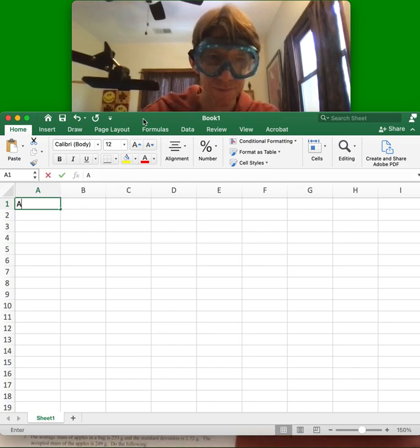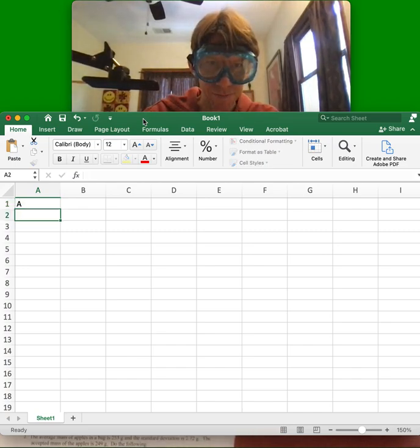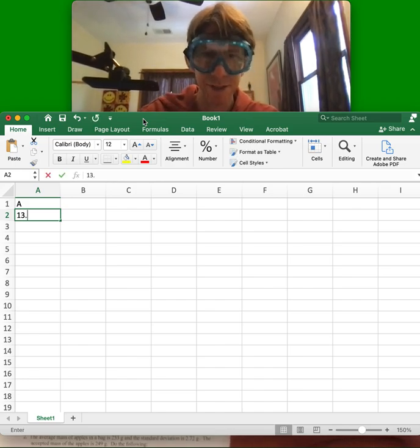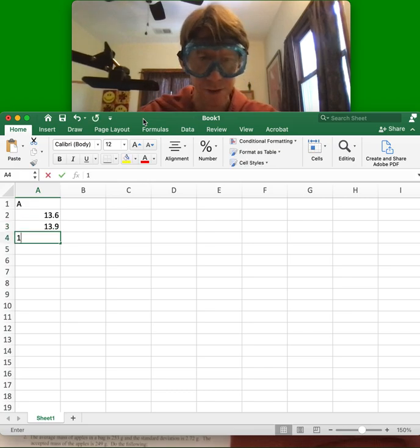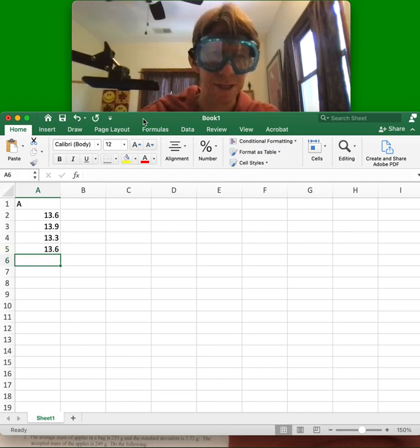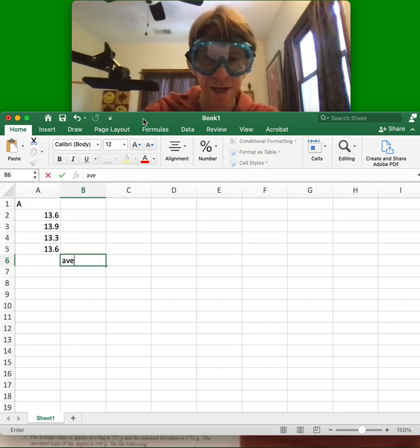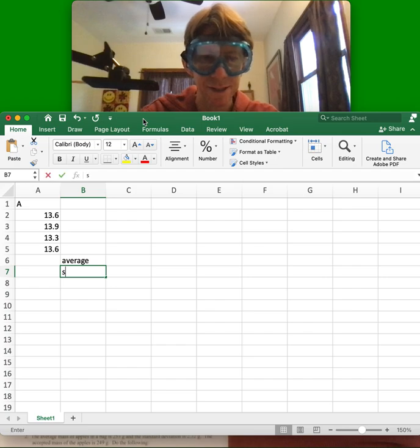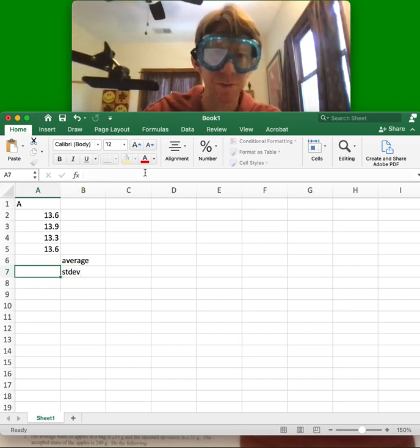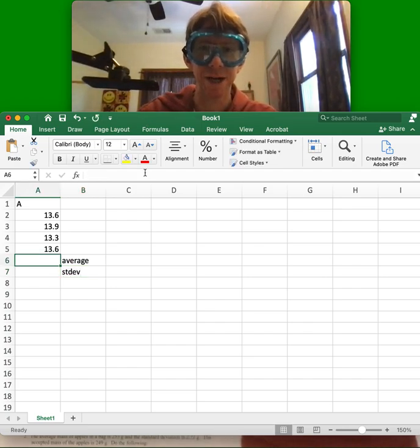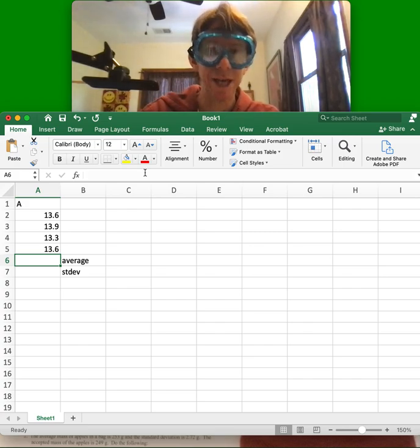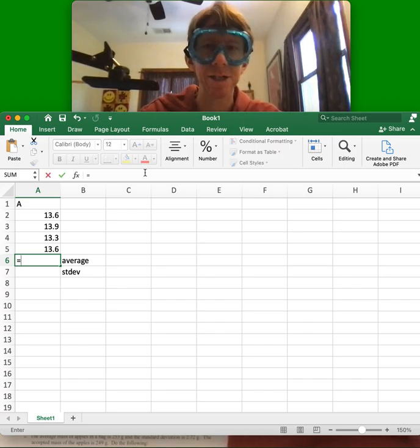And in order to do that, I am going to do my average and standard deviations at least on Microsoft Excel. For student A, there are, I'll put in the numbers here, 13.6, 13.9, 13.3, and 13.6. And then I'm going to put the average and the standard deviation in the two boxes below it. To actually do the average, I'm going to hit equals.